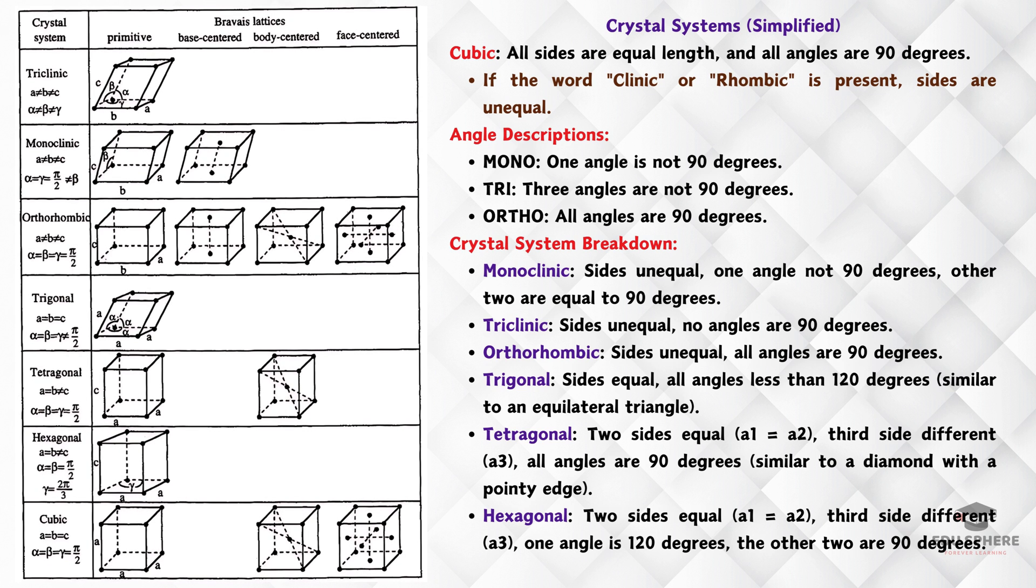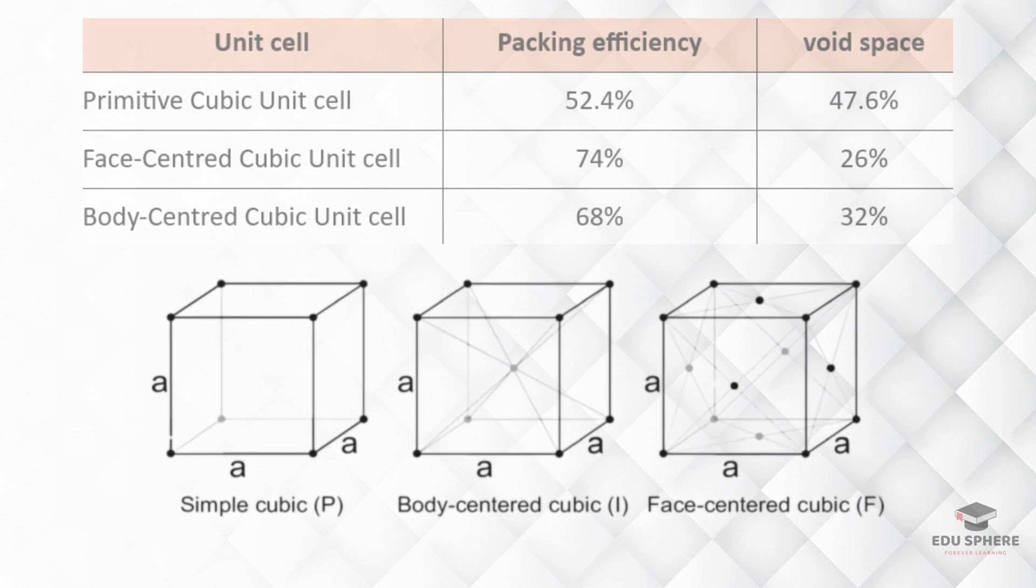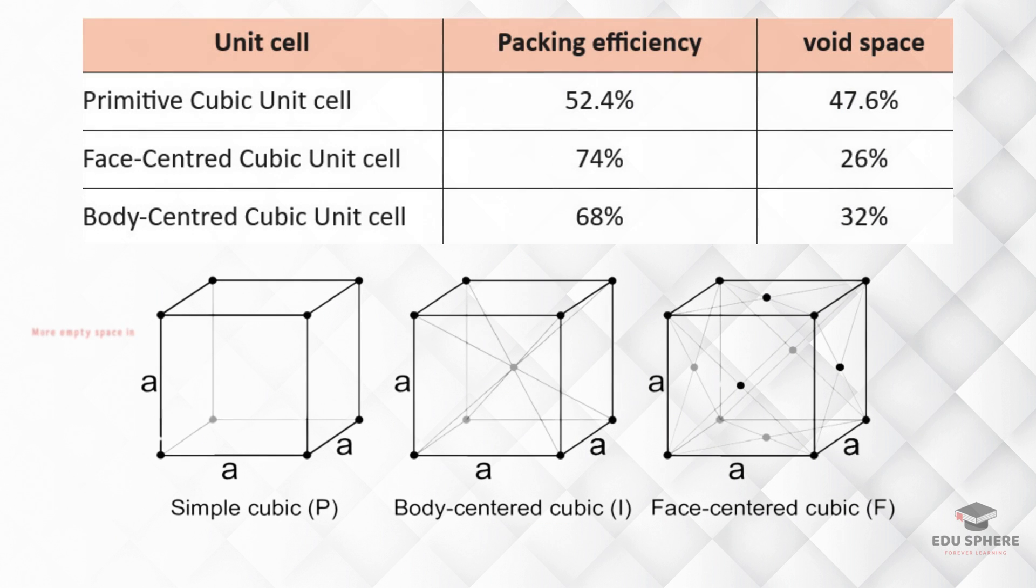We've seen different ways to arrange atoms in a unit cell, but some ways are more space-efficient than others. The simple cubic cell is like a basic apartment building with lots of empty space, but BCC and FCC structures pack the atoms in much tighter. Because of this tight packing, BCC and FCC structures have a packing efficiency around 68% and 74% respectively, compared to only 52% for the simple cubic cell. That extra squishiness translates to stronger bonds between the atoms.